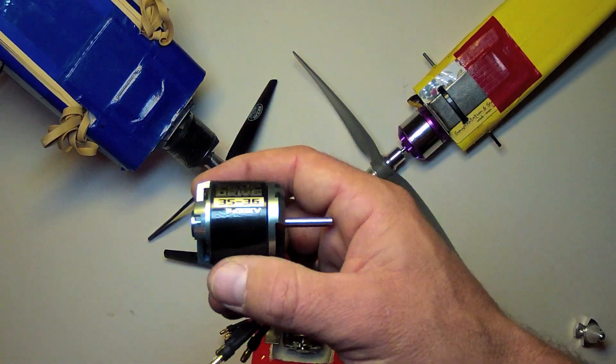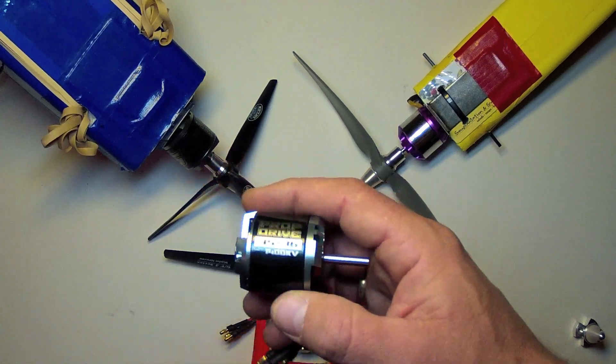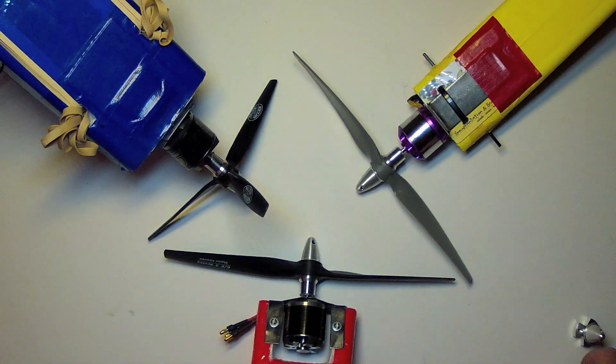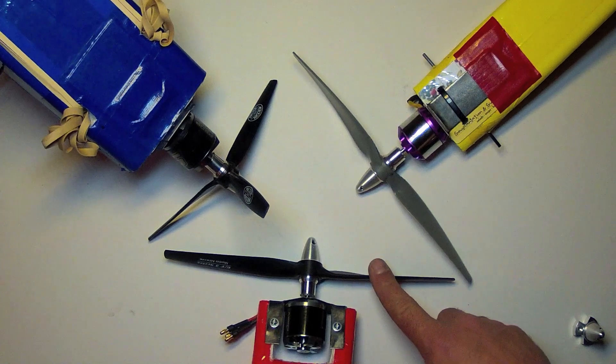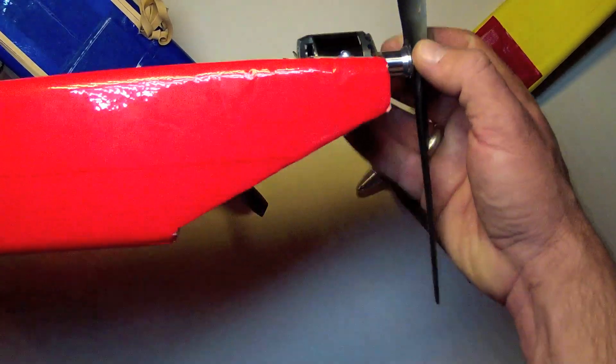I'm having great success with these NTM prop drive Turnigy motors, 35-36. This is a 1400 kV, which is great with a 10x5 prop here, and good for hand launching where ground clearance isn't quite as critical.